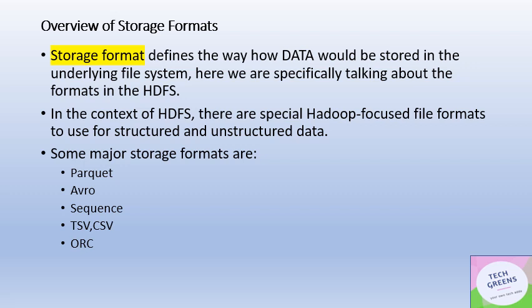Here in the Hadoop ecosystem, in the HDFS world, there are some special Hadoop-focused file formats which are used to persist data whether the data is structured or unstructured. Some of the major storage formats available across the Hadoop ecosystem — and which can be used with technologies like Hive, Spark, and MapReduce — are Parquet, Avro, Sequence files, TSVs and CSVs (which are flat text files), and ORC, which is the Optimized Row Columnar data format.